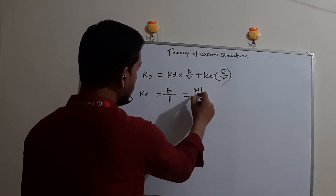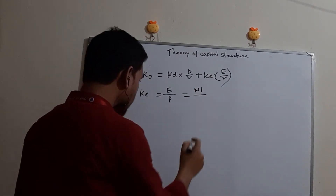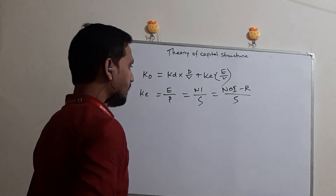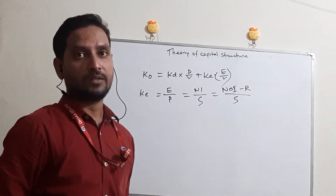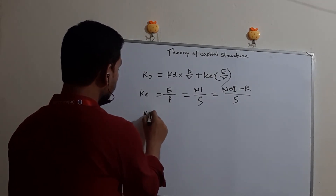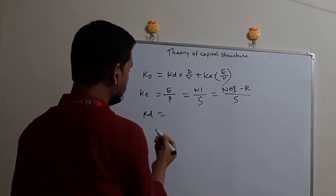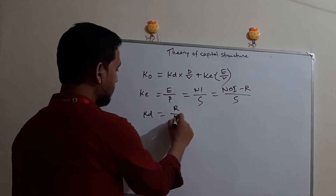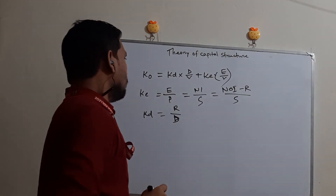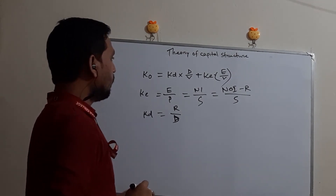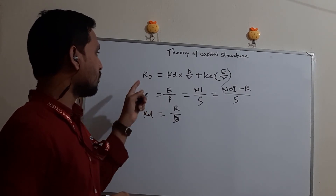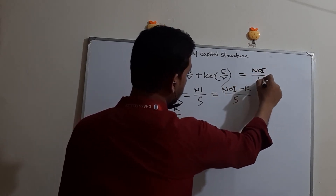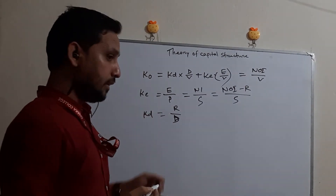Cost of equity KE equals NI divided by S, or NOI minus R divided by S, where S is the market value of shares. Cost of debt KD equals R divided by D, where R equals total interest. Overall cost of capital Ko equals NOI divided by V, also written as X-bar divided by V.